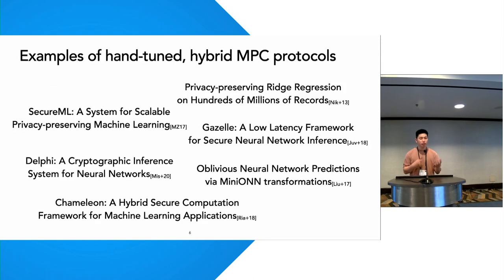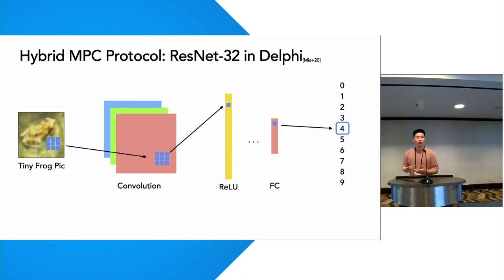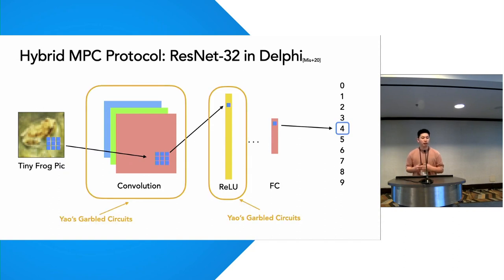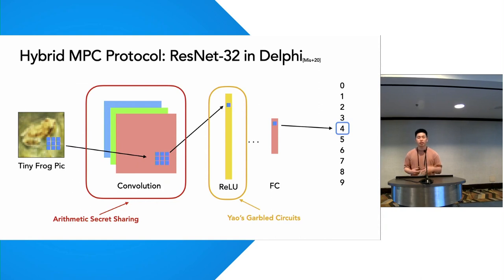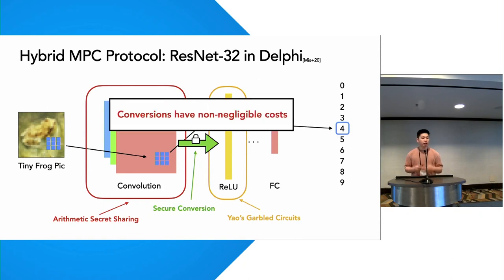To improve the performance of MPC, researchers have designed hand-tuned hybrid MPC protocols that combine multiple MPC primitives within a single application, because each MPC primitive has a different performance model, and by mixing these primitives together we can get better performance. To illustrate how a researcher might hand-tune a hybrid protocol, we'll use this ResNet32 secure inference model from Delphi. A researcher might assign all layers to use Yao's Garbled Circuits; however, for the convolution layer — primarily composed of linear computation — this results in very slow performance. Instead, a researcher might encode this layer using arithmetic secret sharing, which has much better performance for linear computation. Because we're using multiple MPC primitives, we need to add a secure conversion between each of the different layers, and this conversion has a non-negligible cost that can affect the overall runtime of the protocol.